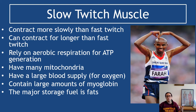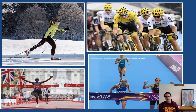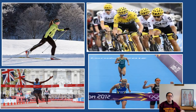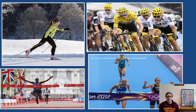Marathon runners tend to show large amounts of slow twitch muscle compared to fast twitch. Examples of sports that support the growth of slow twitch muscle include cross-country skiing, long-distance cycling such as the Tour de France stages, marathon running, and triathlon. These sports require large numbers of long, slow contractions, which is why slow twitch muscle dominates.